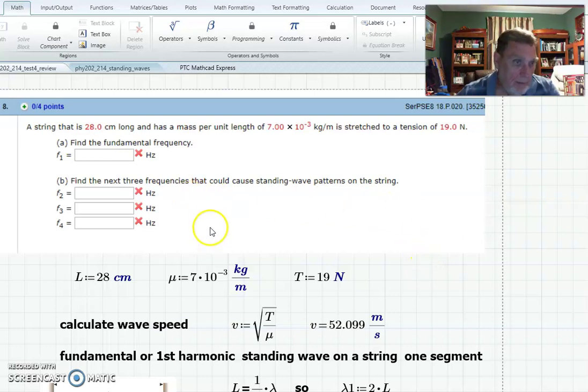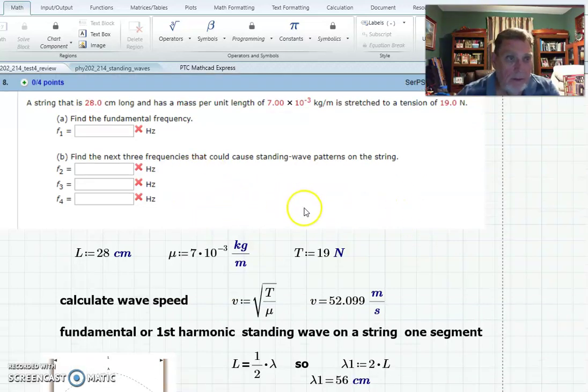All right, so now let's look at problem 8. This is a standing wave on a string, and it gives us how long the string is. This is like what we did in lab. It gives us the mass per unit length and the tension, and so with that we can calculate the velocity.